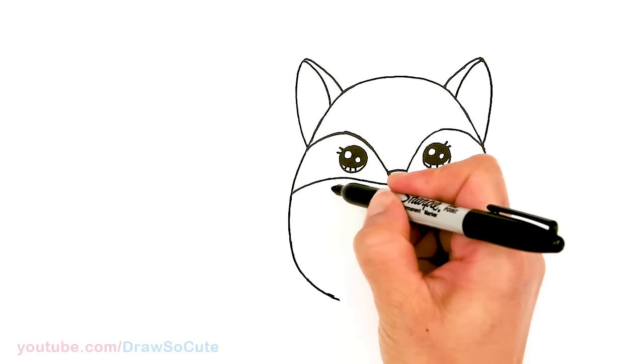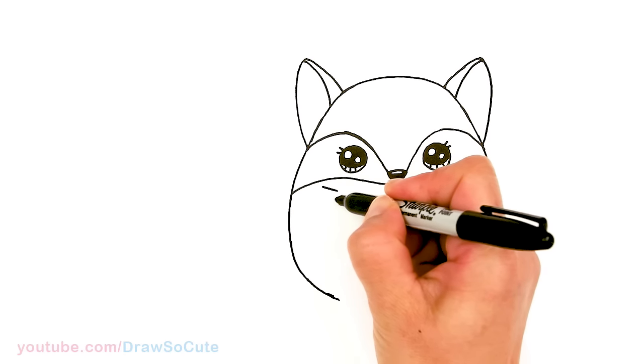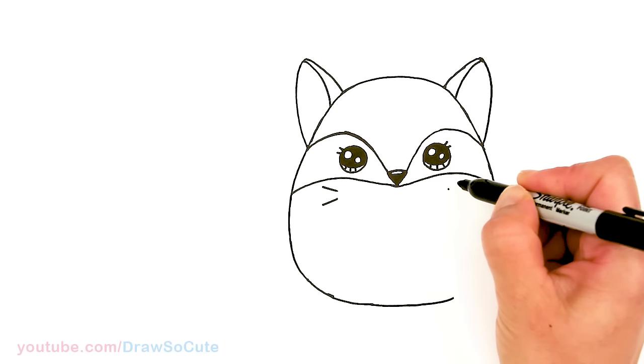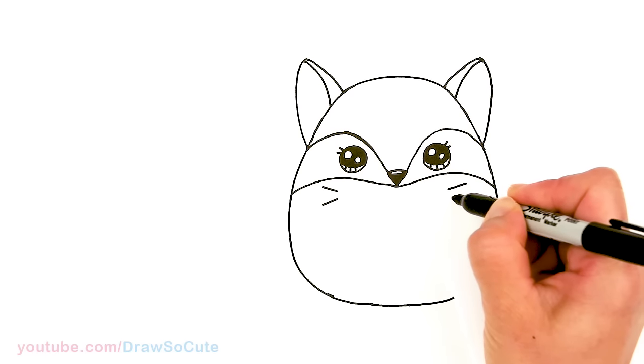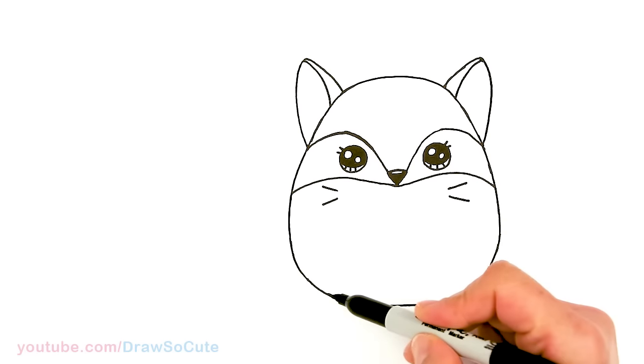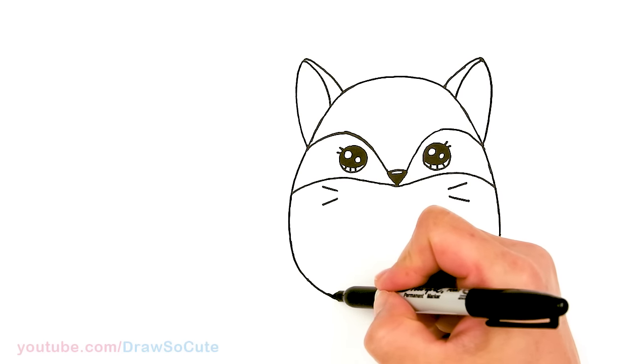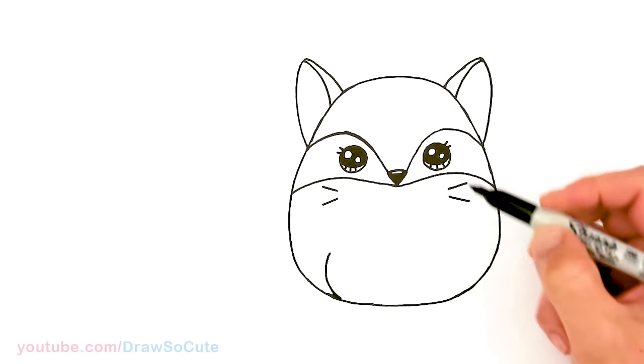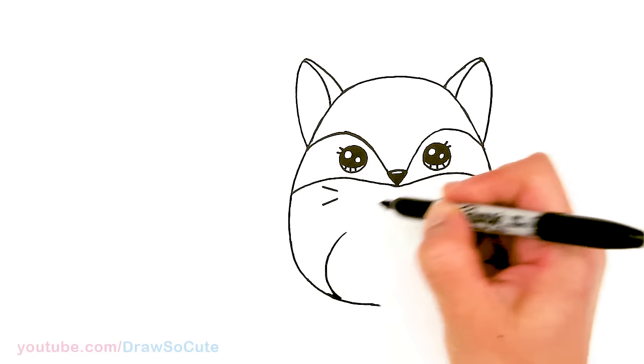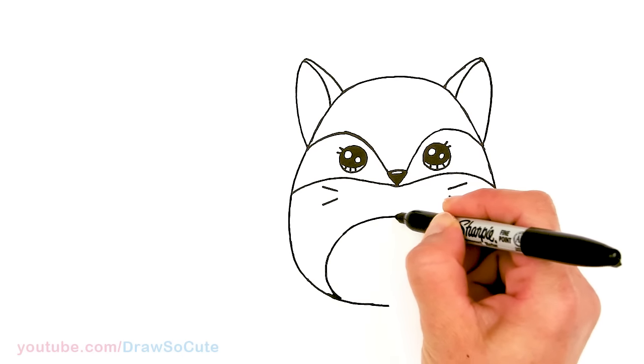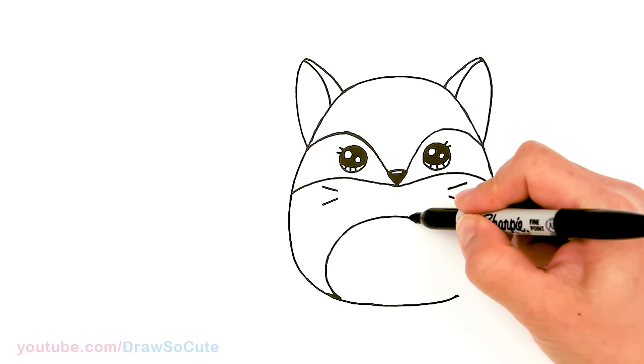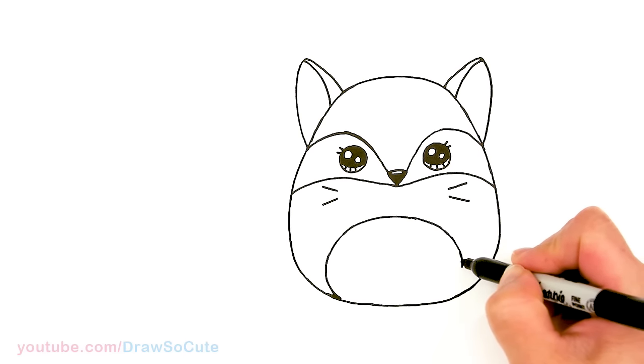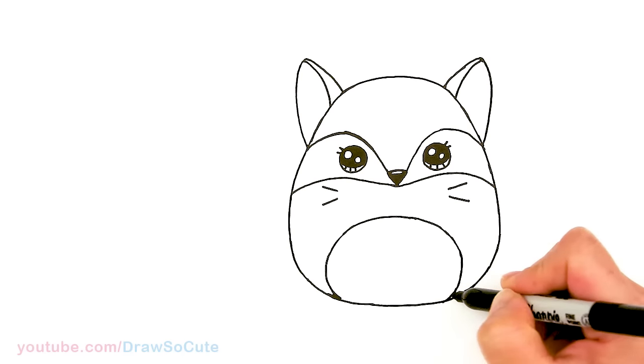Now for the whiskers. I'm going to come to the side right here and add two little whiskers. Same thing right here. And then right here we're going to draw a big curve for the tummy area. About right here, I'm just going to go ahead and bring it all the way around, and tuck it back in.